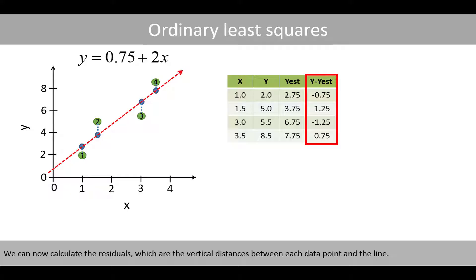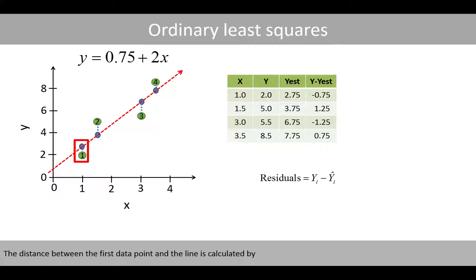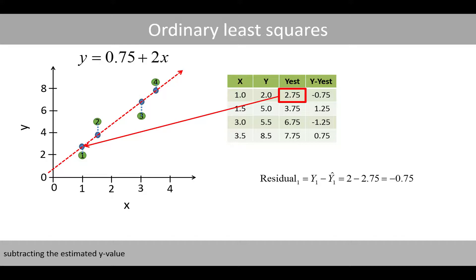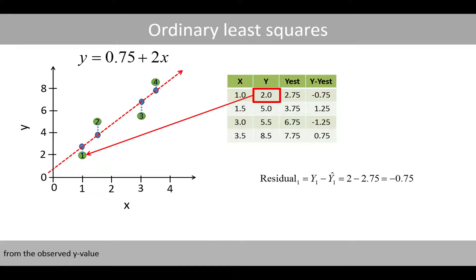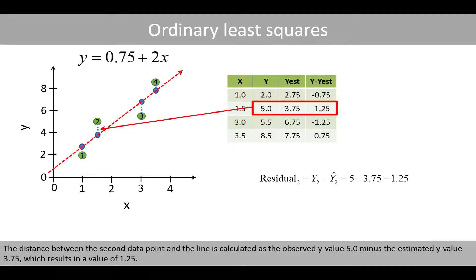We can now calculate the so-called residuals, which are the vertical distances between each data point and the line. This distance is calculated by subtracting the estimated y values from the observed y values. The distance between the first data point and the line is calculated by subtracting the estimated y value from the observed y value, which results in negative 0.75. The distance between the second data point and the line is calculated as the observed y value of 5.0 minus the estimated y value of 3.75.